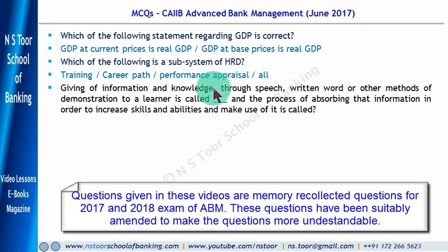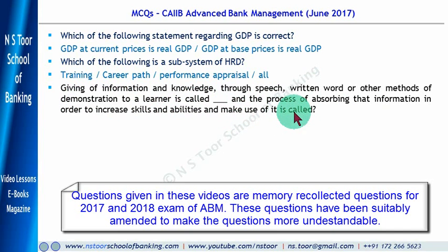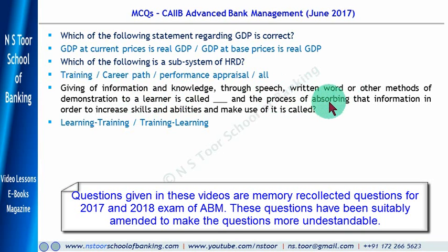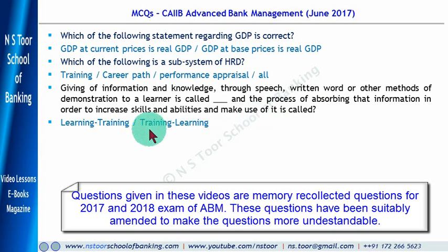Giving of information and knowledge through speech, written word or other method of demonstration to a learner is called what? The process of absorbing that information in order to increase the skills and abilities and make use thereof is called what? The statement has two parts — the first part relates to training and the second part relates to learning. So the correct order here is training and learning.